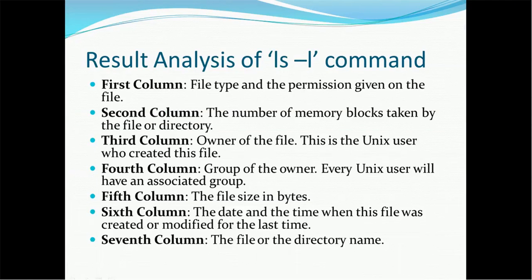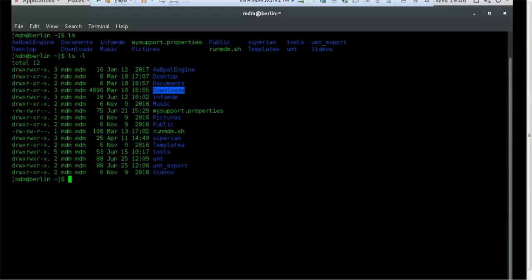In the sixth column, it is the date and the time when this file was created or modified for the last time. So this gives the time detail when that file or folder is created. Seventh column gives the actual name of file or directory name. So you can see this is the seventh column where it is giving the information about the folder name or file name. So these are the details about the information when you use ls minus l.